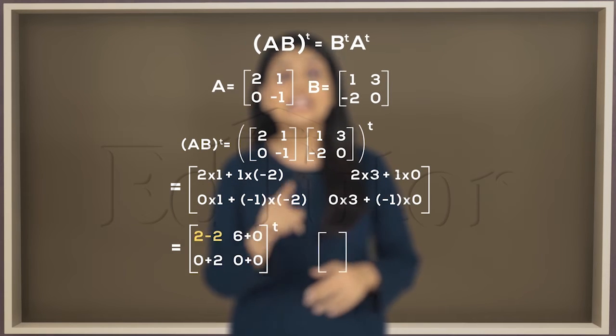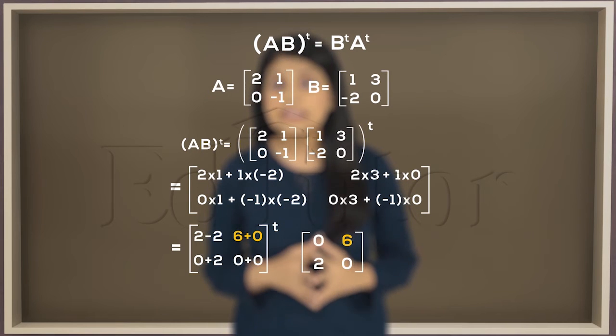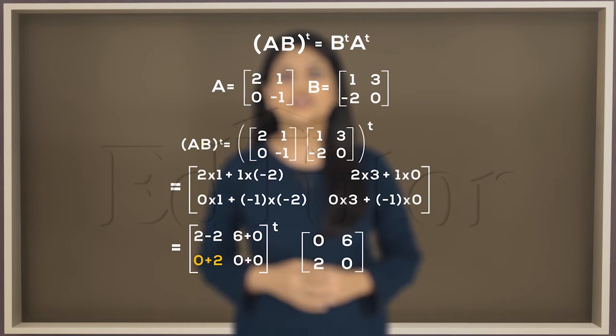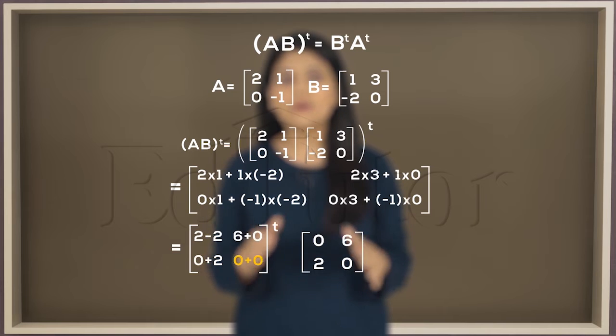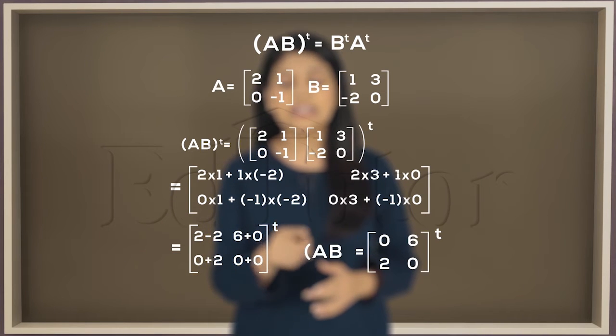Solving the rest you see 2 minus 2 is 0, 6 plus 0 is 6, 0 plus 2 is 2, and 0 plus 0 equals 0. This resultant matrix is AB.